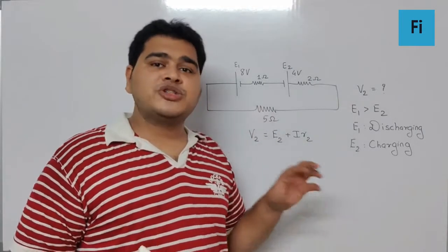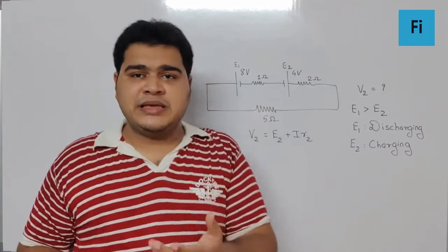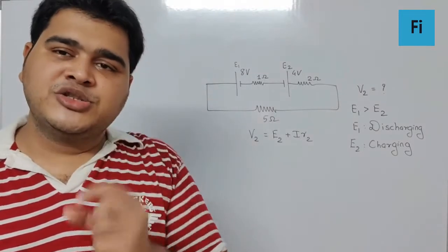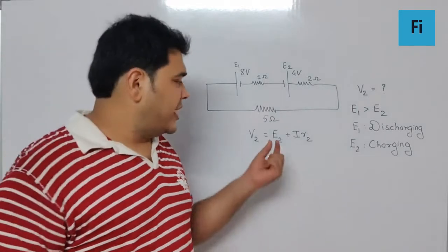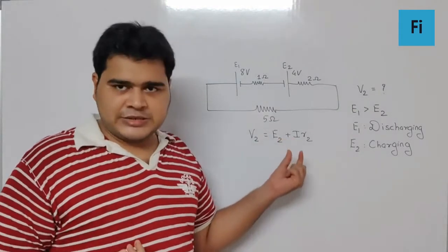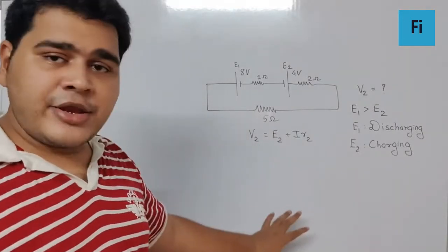But whenever there is a charging concept involved, we can say this minus becomes plus. Okay, now in this scenario we already know the value of E2 which is 4 volt, we already know the value of R2 which is 2 ohm, but definitely we want the current I.